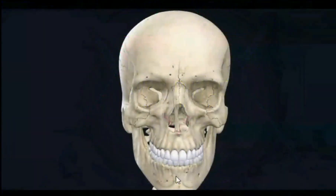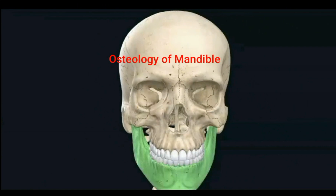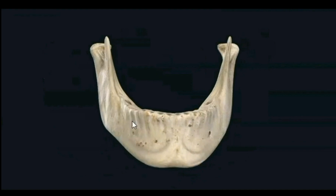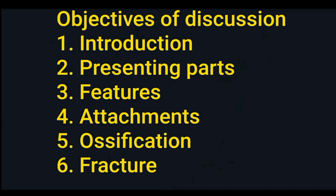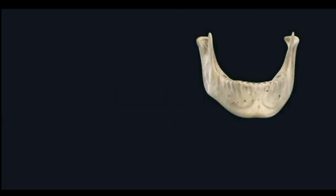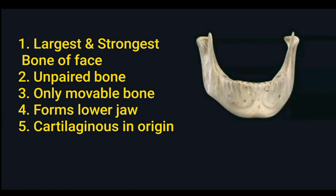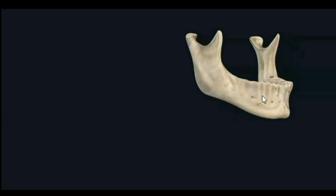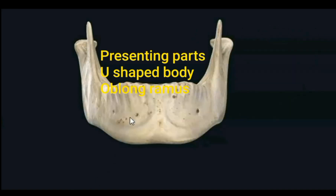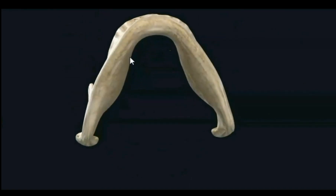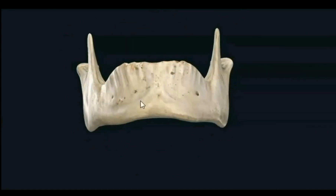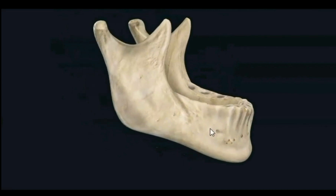Today we will discuss the osteology of the mandible. As seen in the previous videos on introduction to skull, the mandible is part of the facial skeleton. We will cover introduction, presenting parts, features, attachments, ossification, and fractures. The mandible is the largest and strongest bone of the face — an unpaired, only movable bone apart from ossicles, forming the lower jaw. It is cartilaginous in origin, derived from Meckel's cartilage. It is L-shaped in lateral view, presenting a U-shaped (horseshoe-shaped) body and two oblong rami from the posterosuperior part of the body.